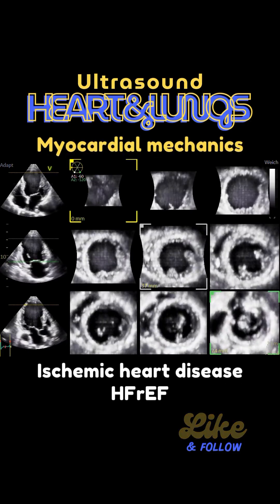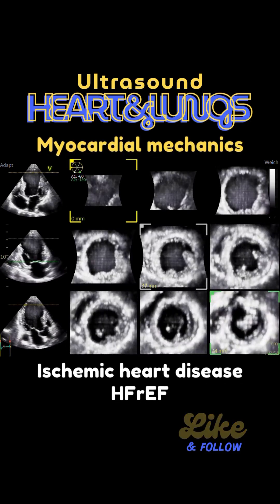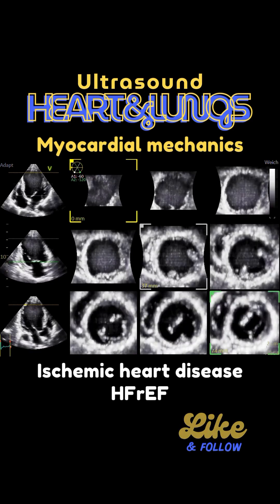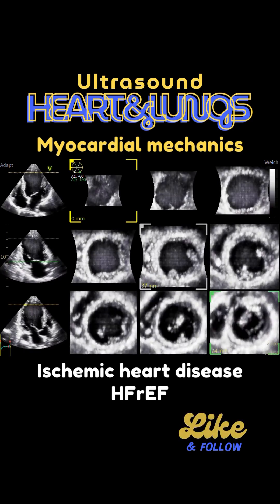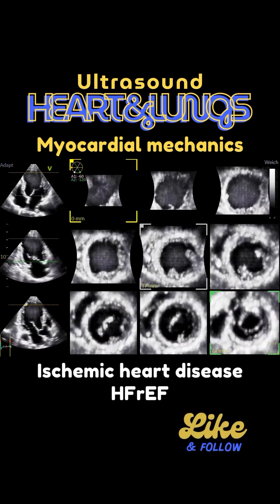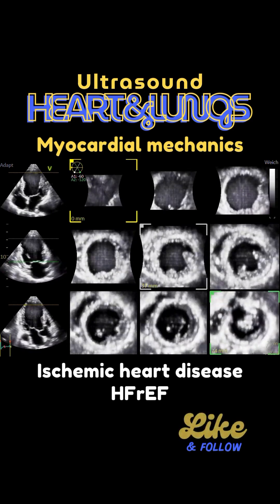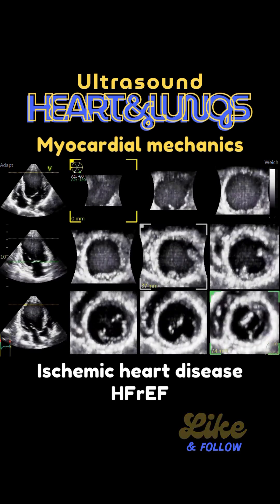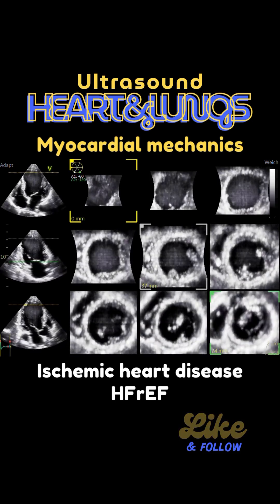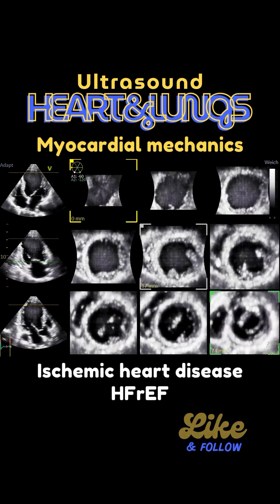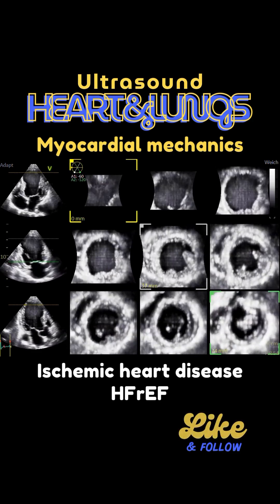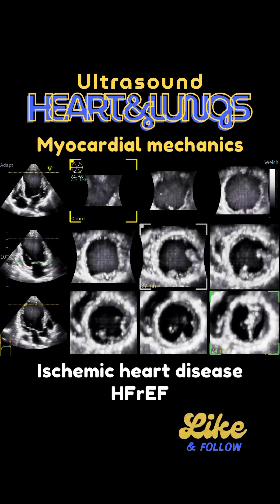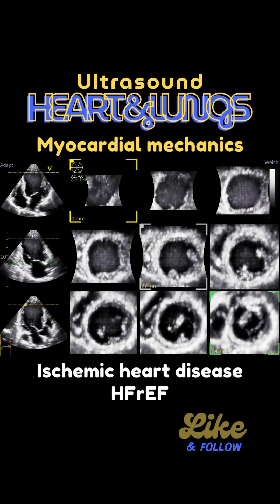In this next example, we see another 3D data set with a patient with a huge left ventricle, and it's evident that there are wall-motion abnormalities in the apical regions. This is a patient with heart failure with reduced ejection fraction, in the range of 20 to 25 percent, and also having the problem of an ischemic heart disease.